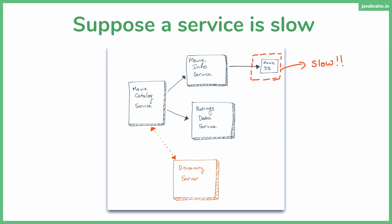Now imagine you have an application where certain APIs go through this path, and certain other APIs just go to the ratings data service with nothing to do with the movie info service. For example, an API that asks how many movies a user has rated — you don't need the movie info service for that; you can just call the ratings data service. So you can have all kinds of combinations. Now if the movie info service is slow, it makes sense that any API depending on it is obviously going to be slow.